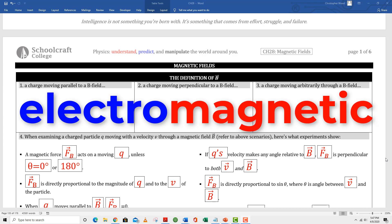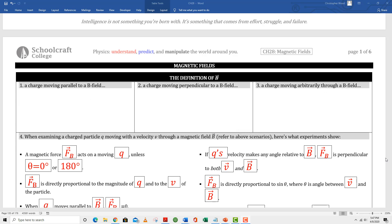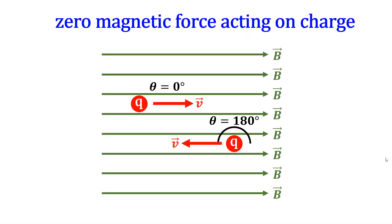Both the electric force and the magnetic force are basically two sides of the same coin. Let's start with an electric charge moving through a magnetic field. Here's what you can draw in box one: if an electric charge is moving parallel or anti-parallel to a magnetic field, it feels no magnetic force.